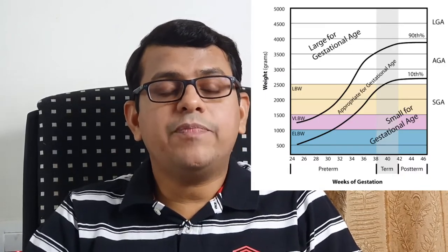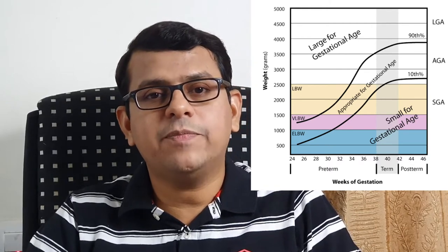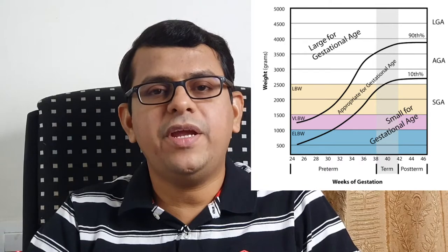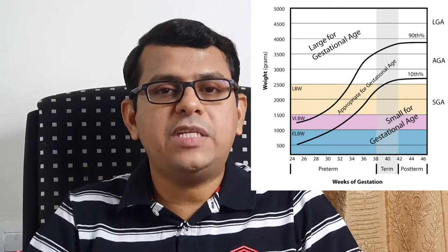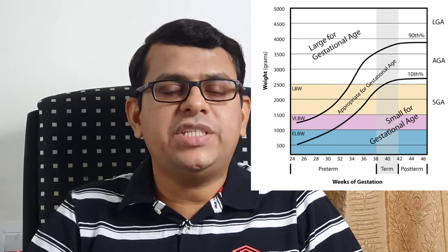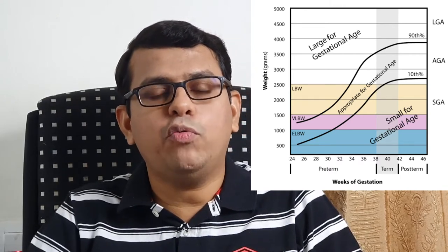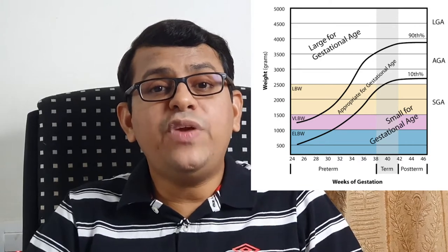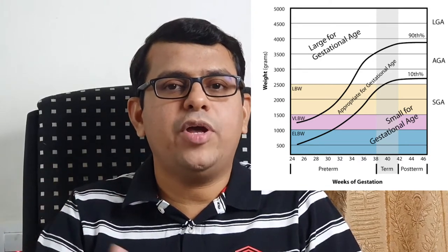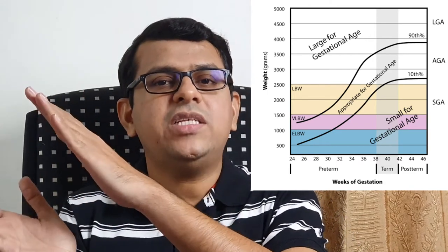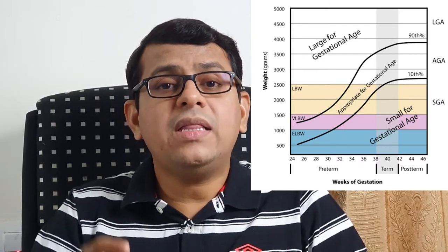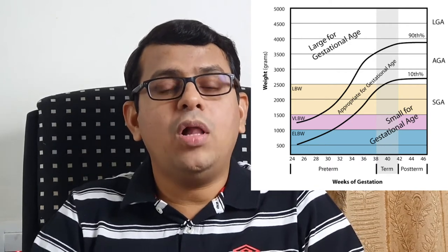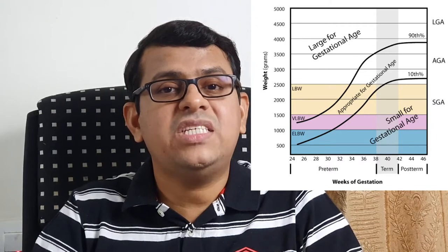But this is not enough. What we need to know is whether this birth weight is appropriate for the gestational age. Gestational age is the period from the first day of the last menstrual period till the date of delivery — how many weeks have passed. A normal term gestation means 37 completed weeks to 42 weeks. For each week of gestational age, there is an appropriate weight range considered normal. If the weight of the baby is low for that baby's gestational age, you call the baby small for gestational age, or SGA.